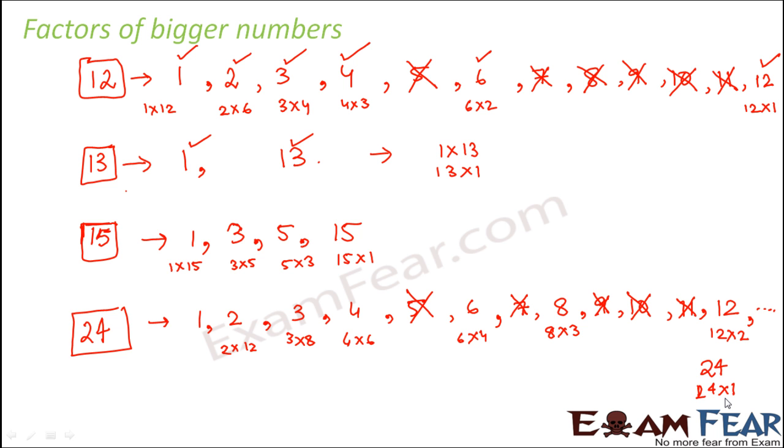So from this list, are you observing certain things? We observe one thing, a factor has to be an exact divisor of that particular number. Second thing that we observed is factor of a number is always less than or equal to the number.